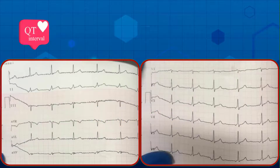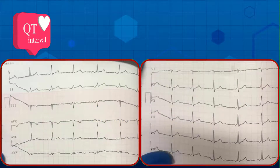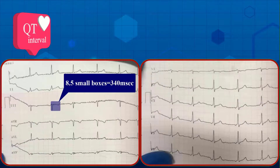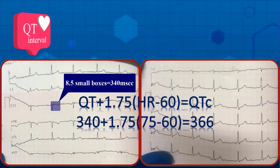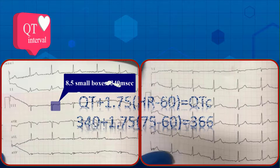Next part is the QT interval. The QT interval is about 8.5 small squares, therefore the QT interval is 340 milliseconds. Since the heart rate is 75 beats per minute, the corrected QT interval according to the Hodges formula is 366 milliseconds, and therefore is normal.